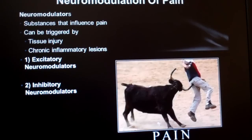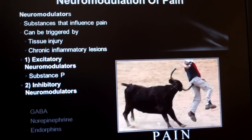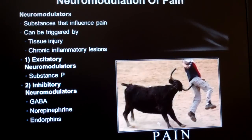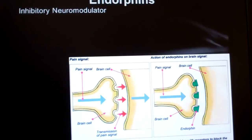You've probably already heard of some of these. GABA — G-A-B-A — is a popular example, and we'll look at that in more detail in the next slide under the broad category of endorphins. Also, norepinephrine is a well-known inhibitory neuromodulator of pain, although you might not have thought about it in that way before.